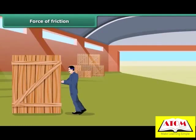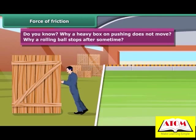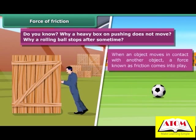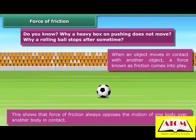Force of friction: Do you know why a heavy box on pushing does not move? Why does a rolling ball stop after some time? When an object moves in contact with another object, a force known as friction comes into play. The force of friction always acts on all objects, and its direction is always opposite to the direction of motion. The moving object gradually slows down and ultimately stops due to the force of friction, which always opposes the motion of one body over another body in contact.